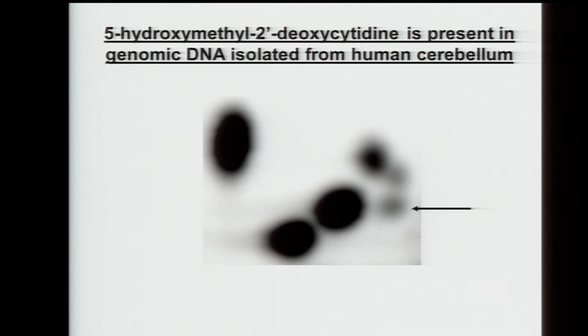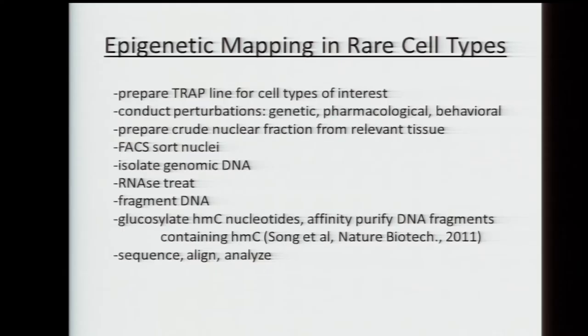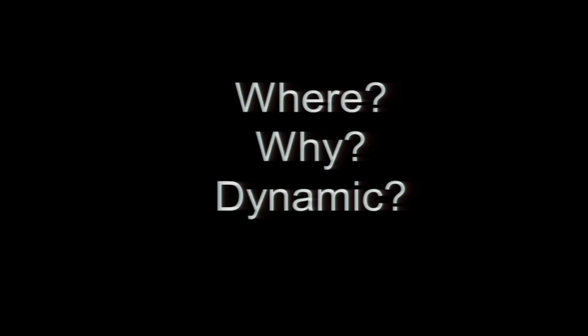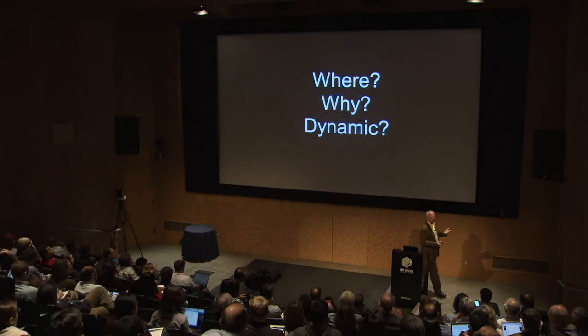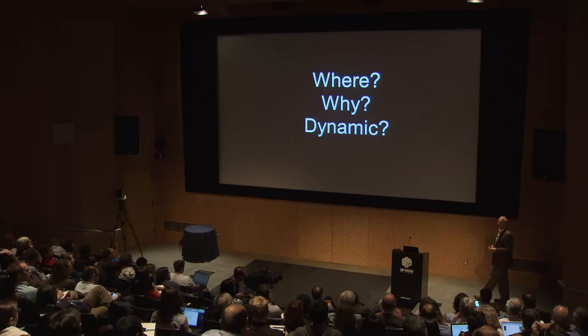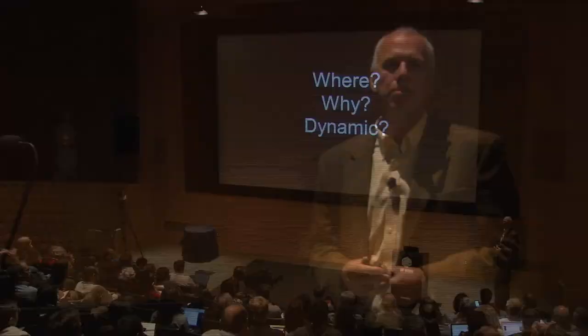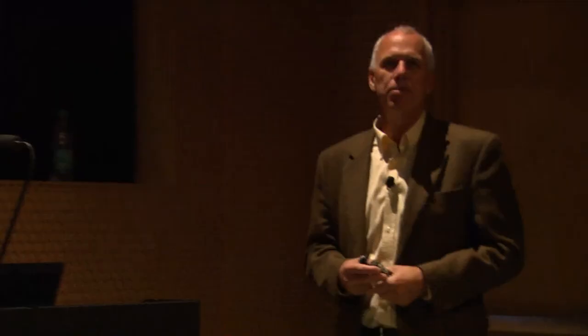Is it just in mice or rodents? No. If you take genomes from human cerebellum, you see this spot — in fact, there's even more of it in human cerebellum than in mouse cerebellum. The questions are: where is this in the genome, why is it there, and can it be dynamically regulated? Most of you probably know there's a lot of work on epigenetic mechanisms contributing to nervous system diseases. One of the proteins identified, MeCP2, which is mutant in Rett syndrome, binds methyl C. We don't know the answers to these questions, but we do know certain things.